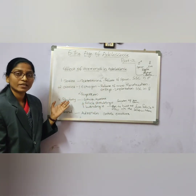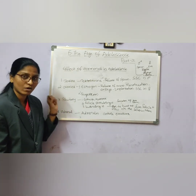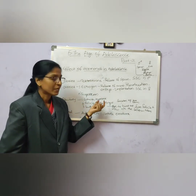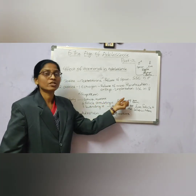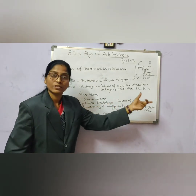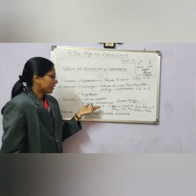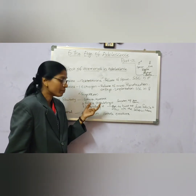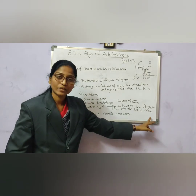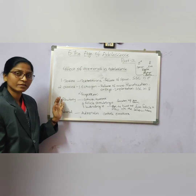Next is the pituitary gland, called the master gland because it controls other hormones. It produces growth hormone, which helps in growth; follicle-stimulating hormone (FSH), which stimulates the formation of ovum in adolescent girls and formation of sperms in adolescent boys; and luteinizing hormone (LH), which stimulates the egg to burst out from the follicle and flow into the fallopian tubes.